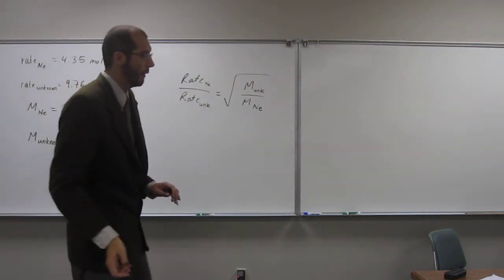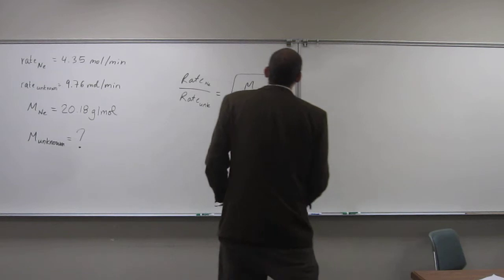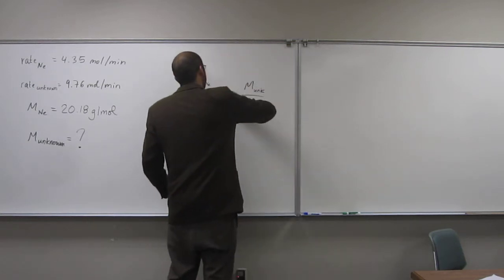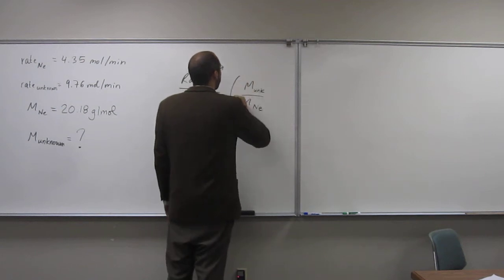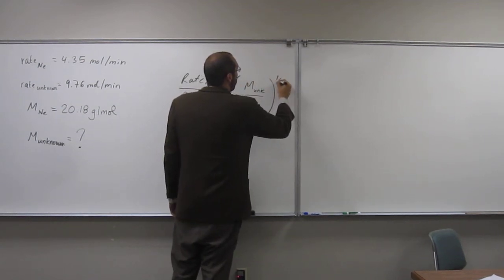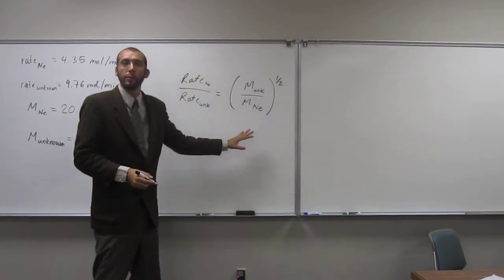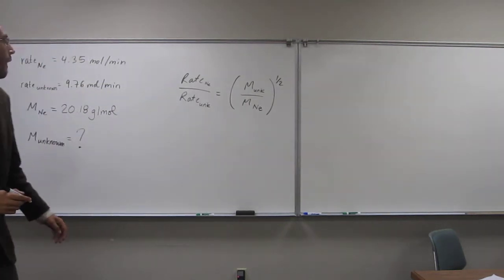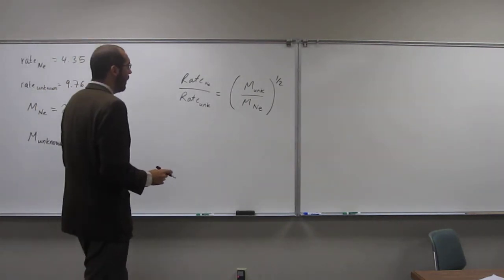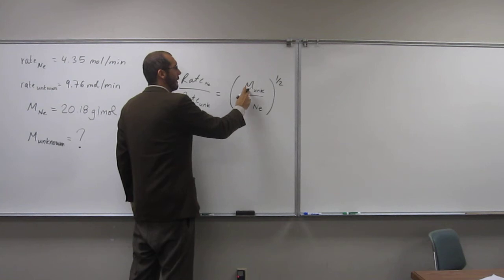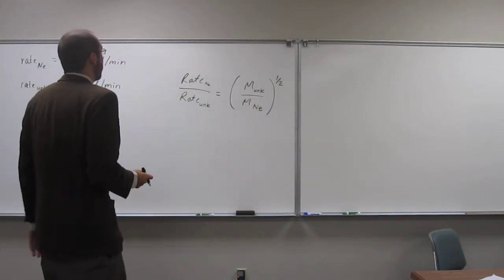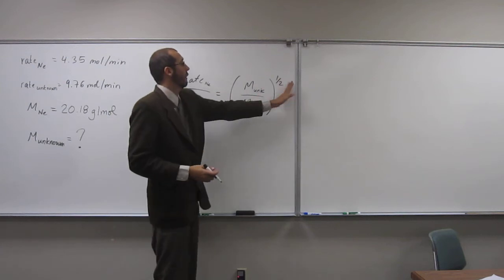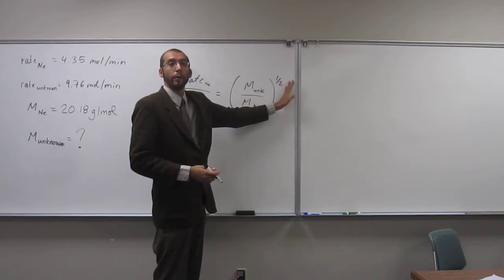So again, I don't like to mess with these kind of square root symbols because they're kind of cumbersome in my mind. So I'm just going to make this an exponent, the one half. Hopefully everybody's okay with that by now. Okay, so we're looking for the molar mass of that unknown gas. So let's isolate that variable. So how are we going to do that? How are we going to get rid of that one half of that square root there? What would we do?